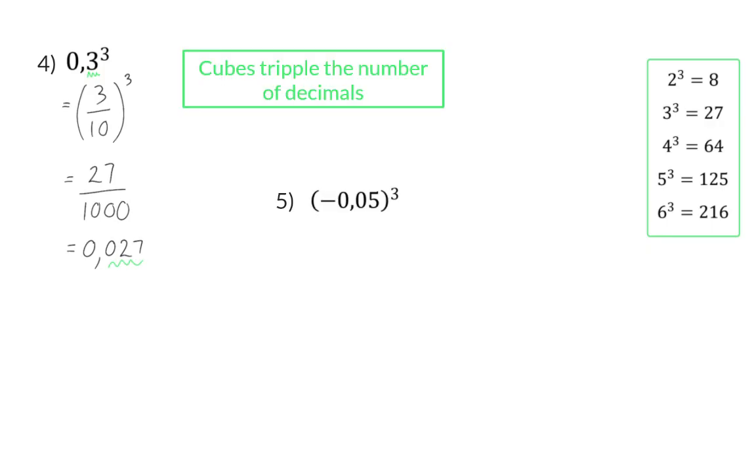In the next example, I'm going to choose to immediately write down the answer. I'm going to start off taking my minus and cubing that, which will give me a minus again. Next, I'm going to get the cube of 5, which is 125. The original two decimal places that I had will now triple and become 6. The 125 will be the last three decimals, which means we still need to add three zeros in front.